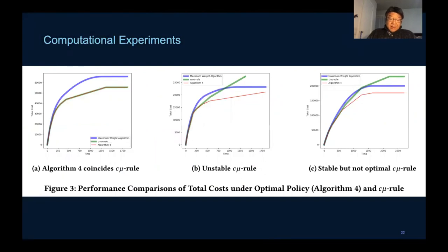In the first case, C-mu coincides with the optimal algorithm. In the second case, C-mu is unstable. In the third one, C-mu is stable but suboptimal.